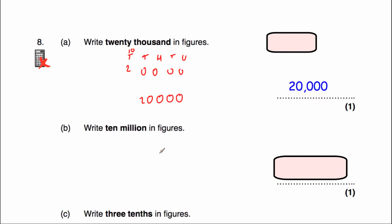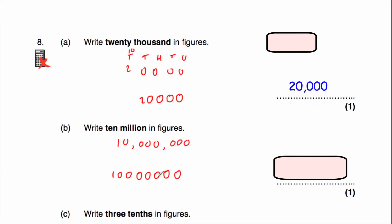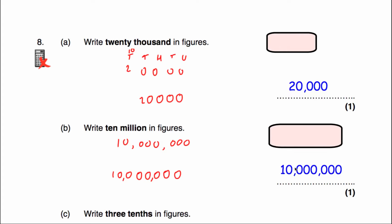The next question says to write the number 10 million in figures. We looked at 2 million in question 7B where we wrote a 2 followed by 6 zeros. So for 10 million we could write a 10 followed by 6 zeros. Using place value columns — units, tens, hundreds, thousands, tens of thousands, hundreds of thousands, millions, tens of millions — you'd have a 1 in the tens of millions column and zeros in the rest. The answer is a 1 followed by 7 zeros, or 10,000,000.